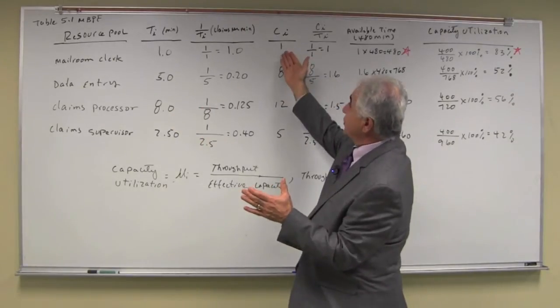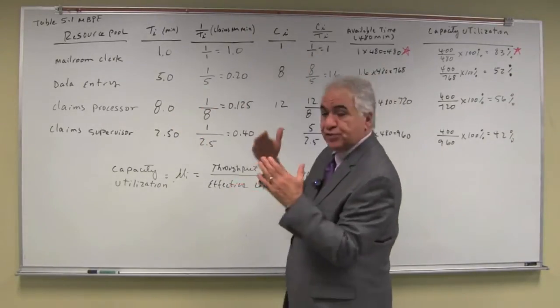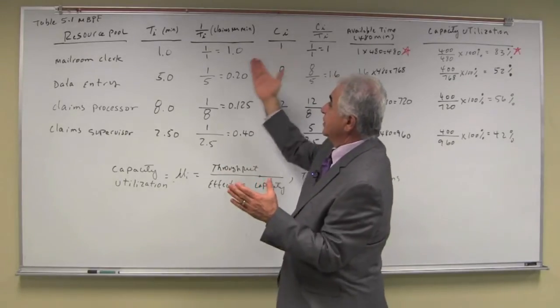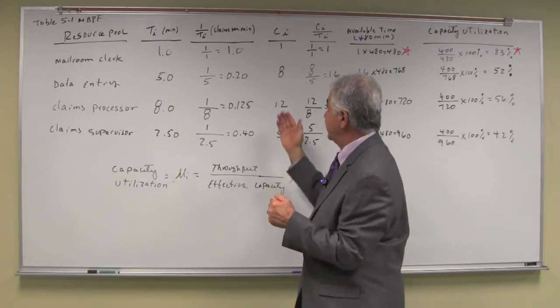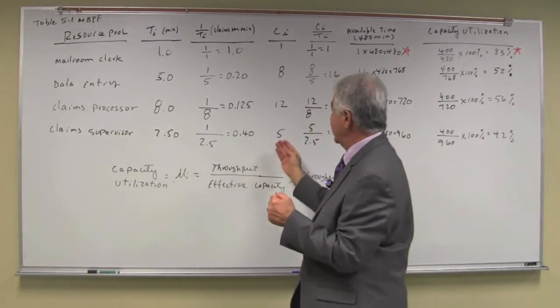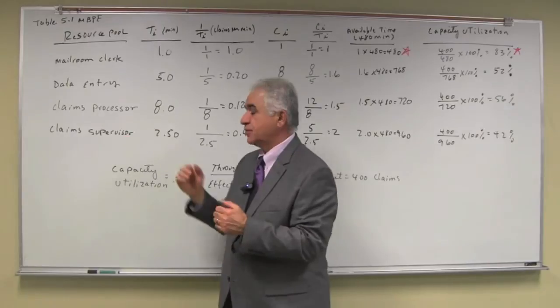So the number of units per pool, resource pool, we have one mayor and clerk, eight data entry operators, twelve in claims processing and five in claims supervisor.